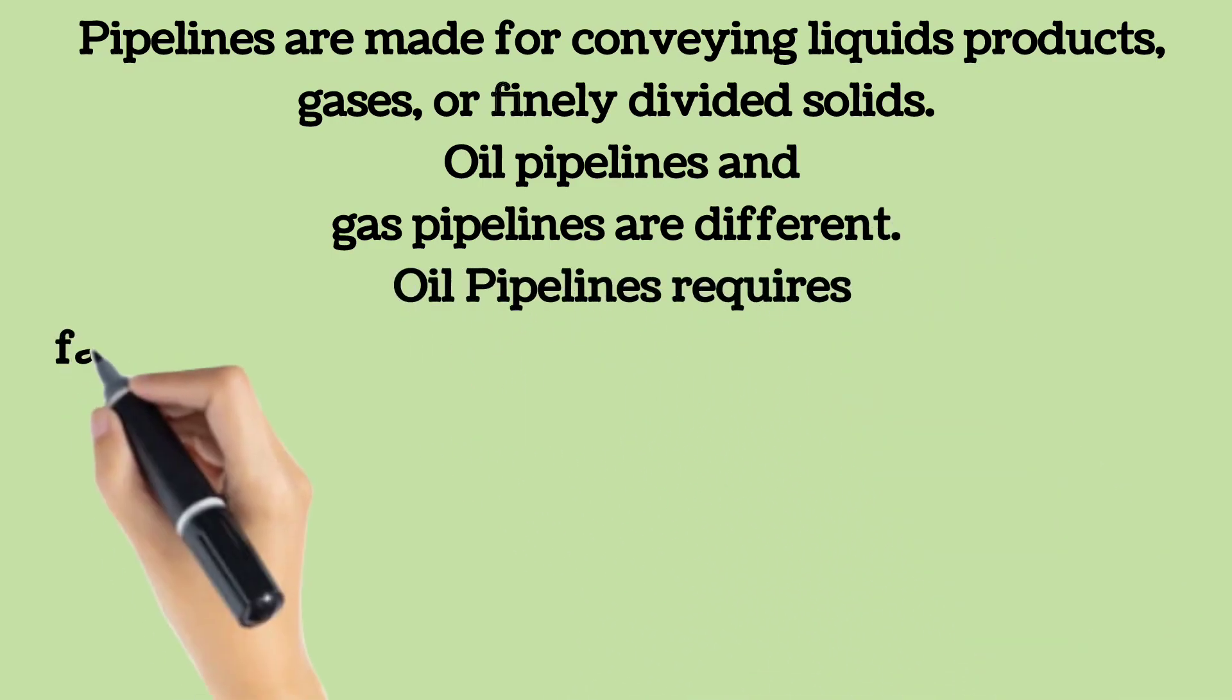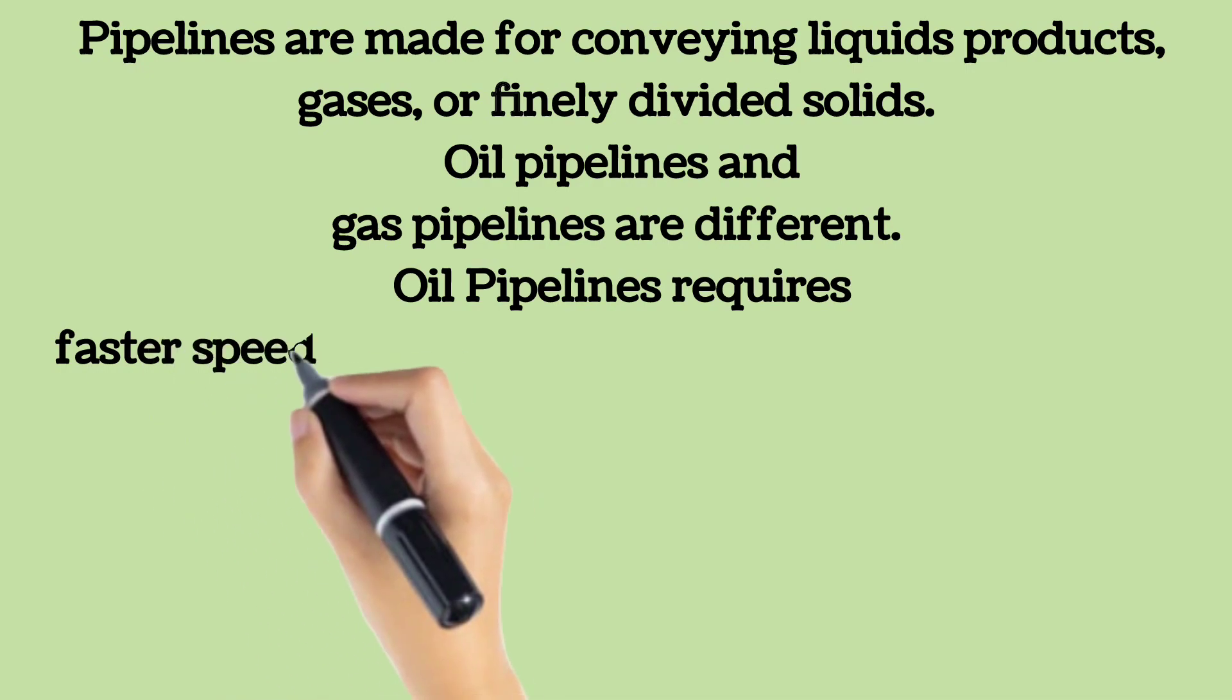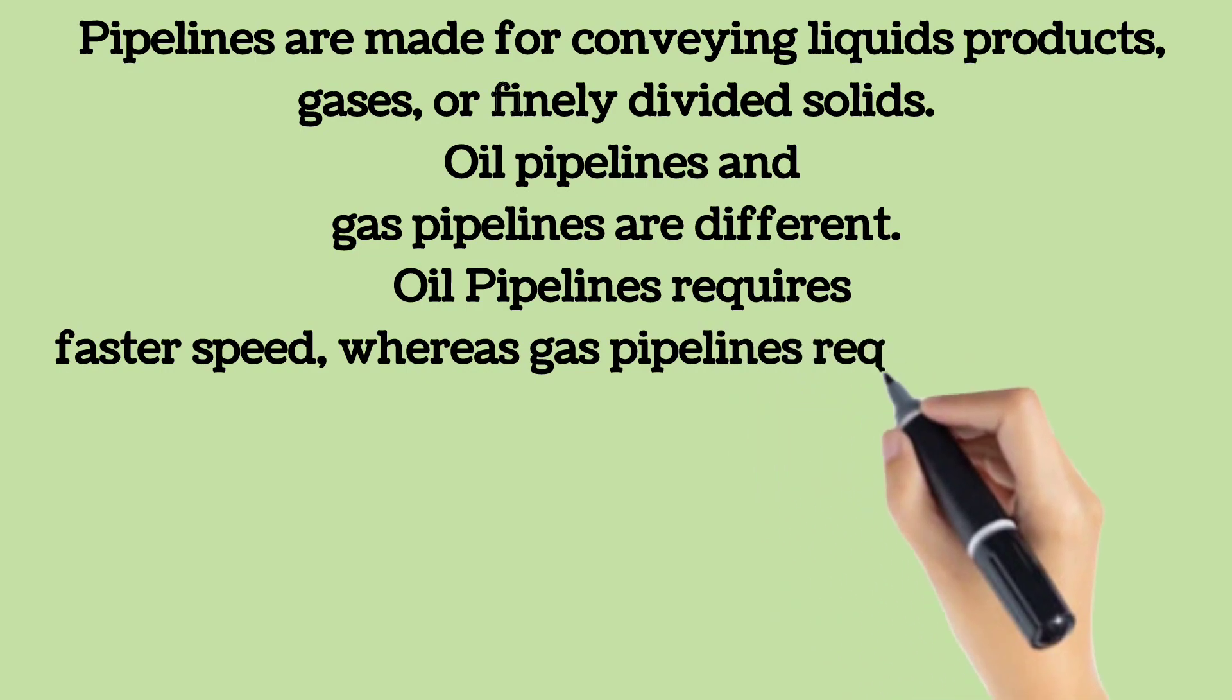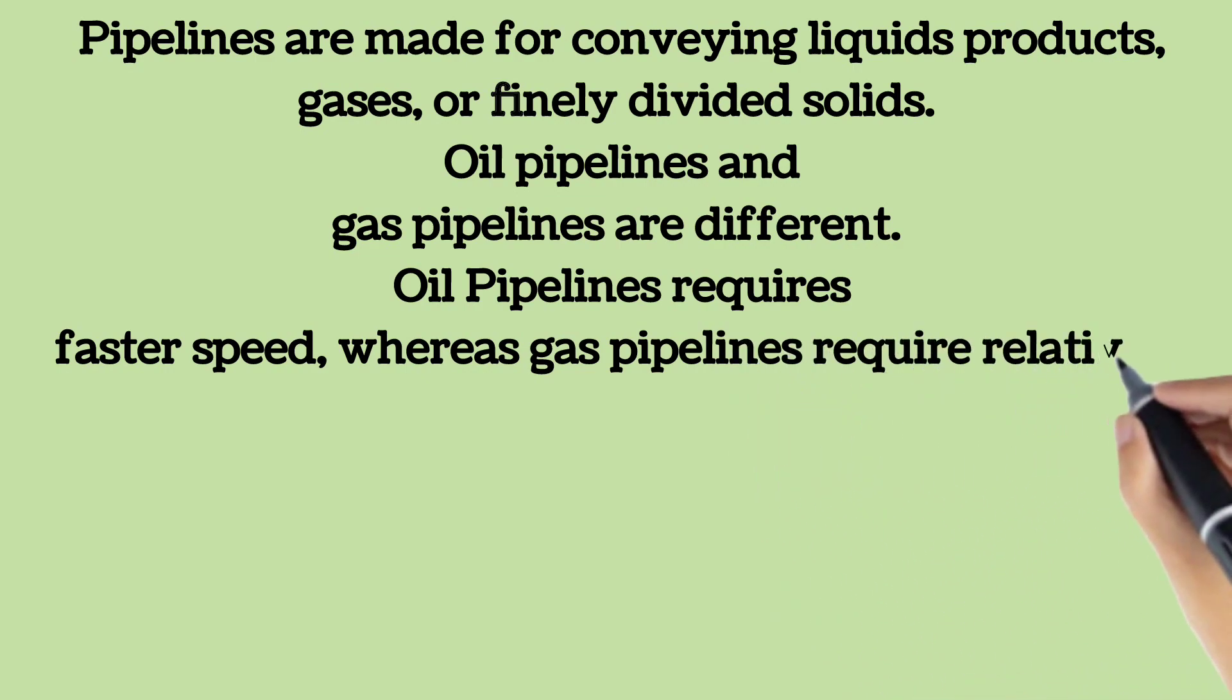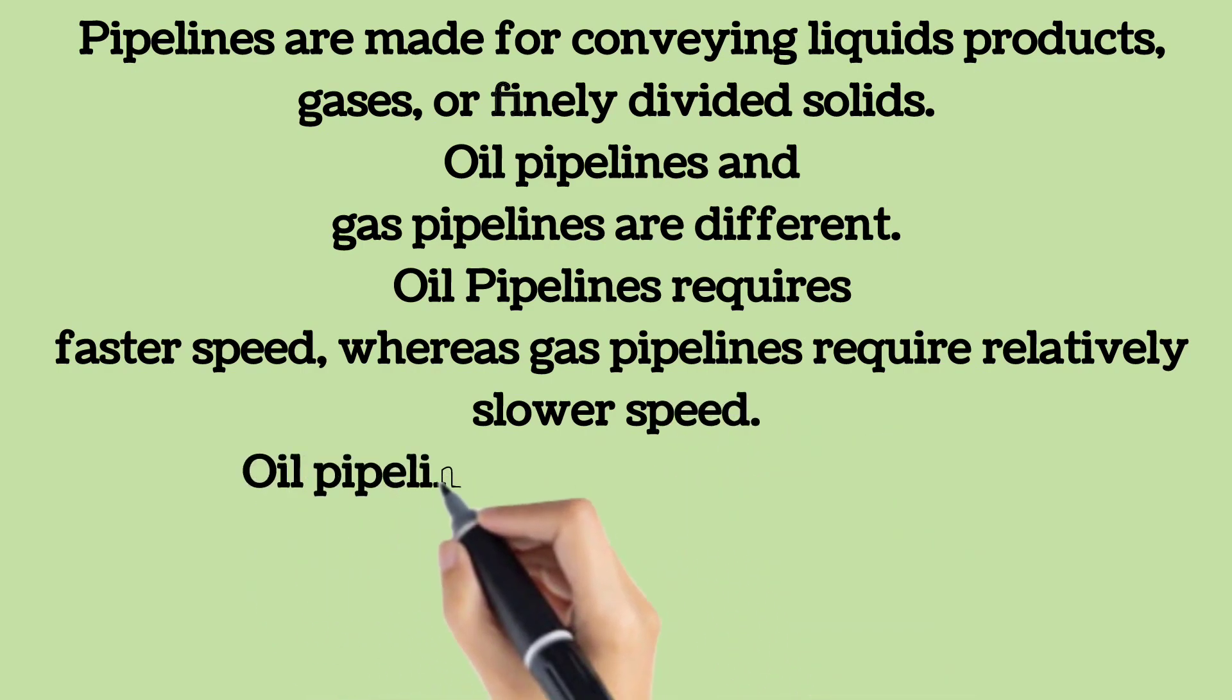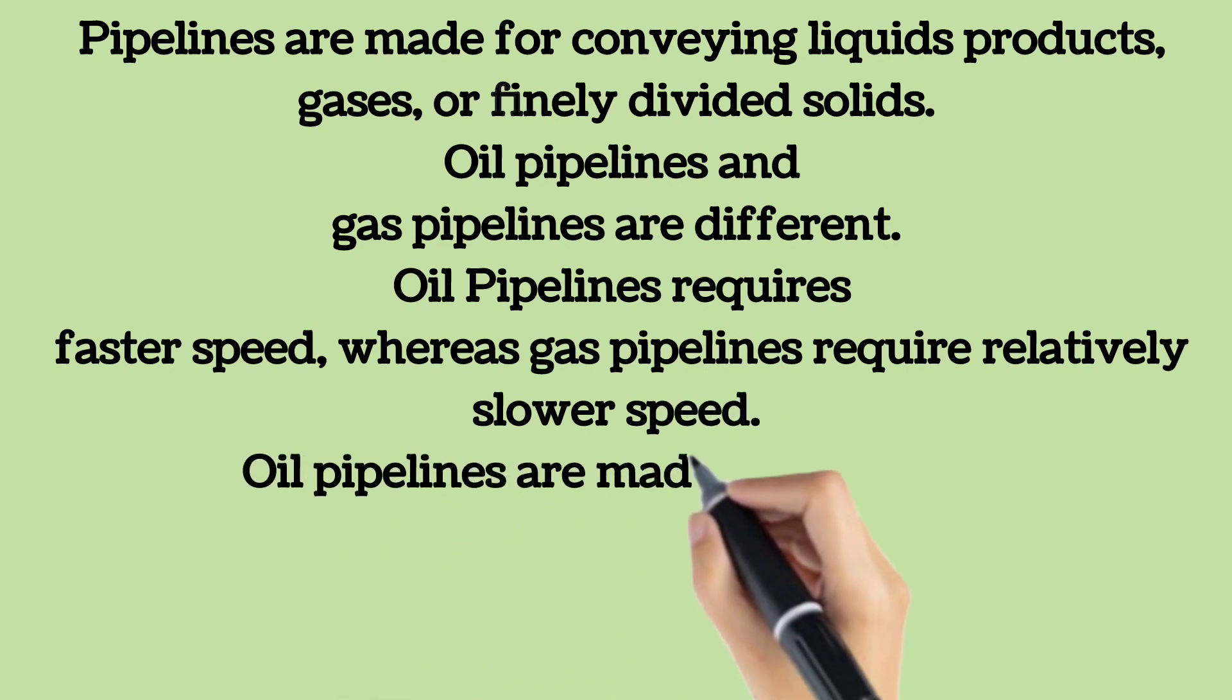For oil pipelines, it requires faster speed, whereas gas pipelines require relatively slower speed. Oil pipelines are made from steel or plastic tubes which are usually buried. The oil is moved through the pipelines by pump stations along the pipeline.